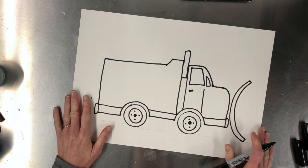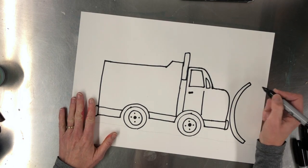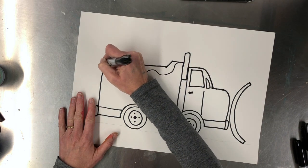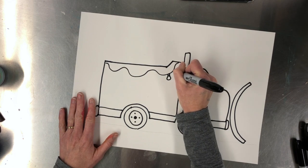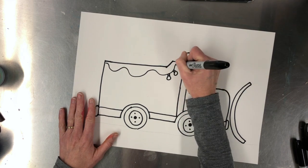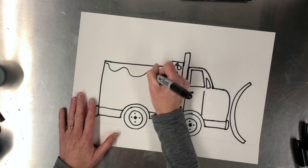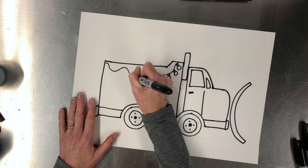Now you can decorate this however you want. Maybe I have some lights off of my truck. Again, draw it big because you want to be able to paint this. If it's too small you won't be able to paint.